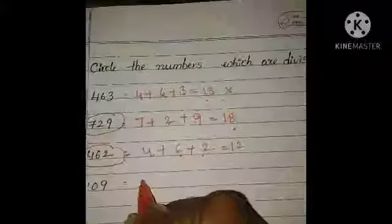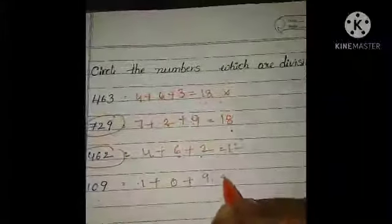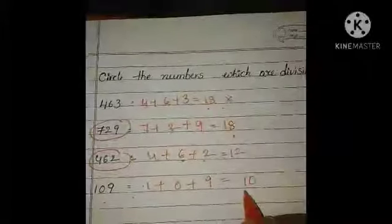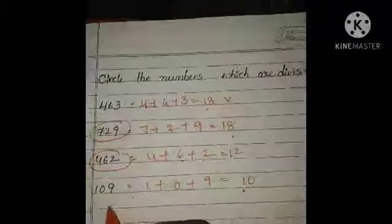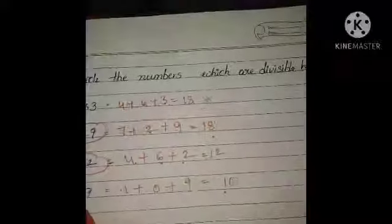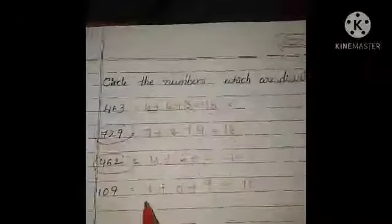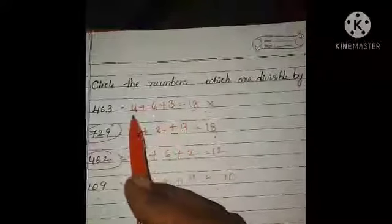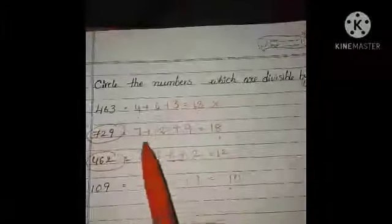For 109: 1 plus 0 plus 9 equals 10 — 10 is not in the 3 table, so not divisible by 3. This is the rule for divisibility by 3: if the sum of all digits is divisible by 3, then that number is also divisible by 3.